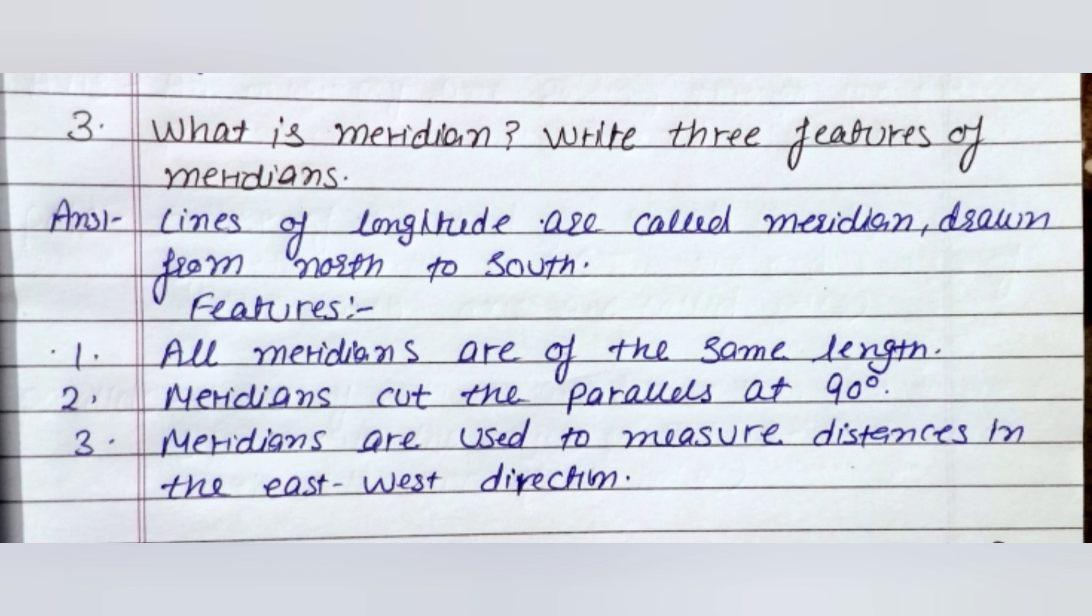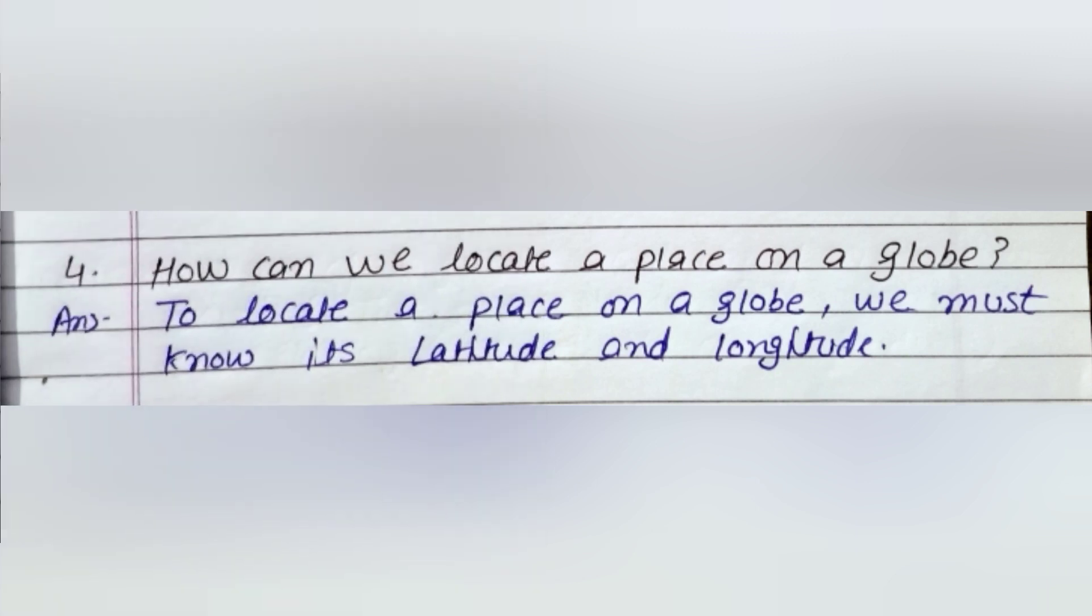Question number four is: How can we locate a place on a globe? Answer of this question is: To locate a place on a globe, we must know its latitude and longitude.